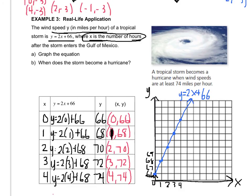And now we move on to letter B. When does the storm become a hurricane? So that information is over here. A tropical storm becomes a hurricane when wind speeds are at least 74 miles per hour. So 74 miles per hour happened here when X was 4. I got 74. So 4 hours.